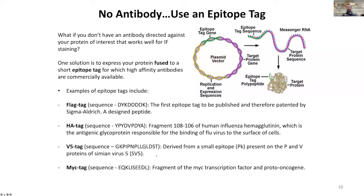If you don't have an antibody towards a protein of interest, you can use an epitope tag. This involves making a construct where you add an epitope tag sequence — such as FLAG, HA, V5, or Myc — to the end of your protein of interest and transfect it into your cells. Commercially available antibodies against these tags have extremely high affinity, very little cross-reactivity, and are very easy to use.